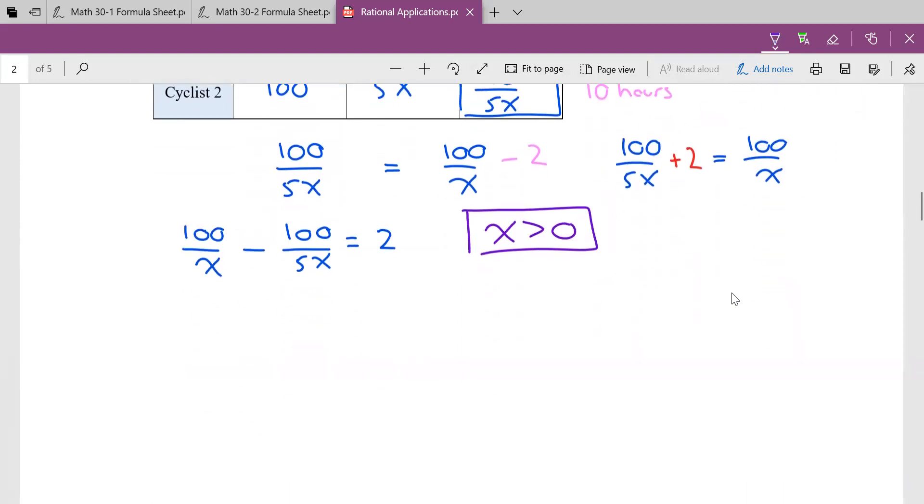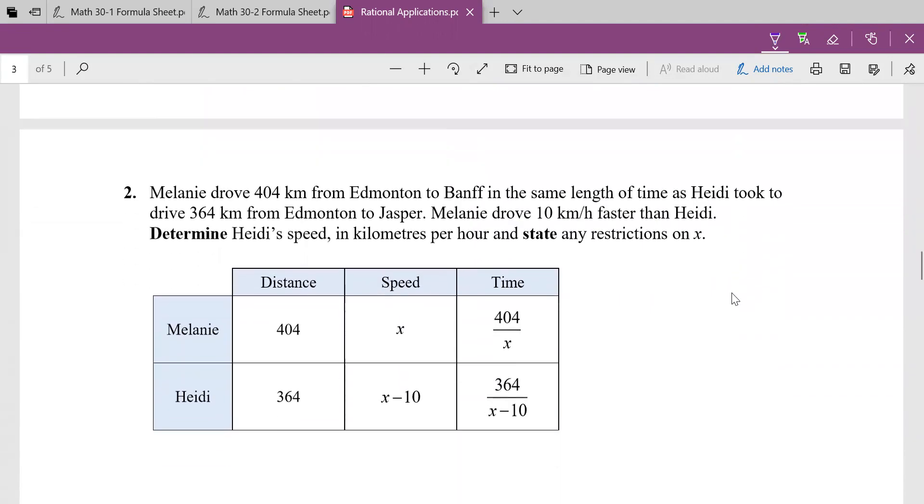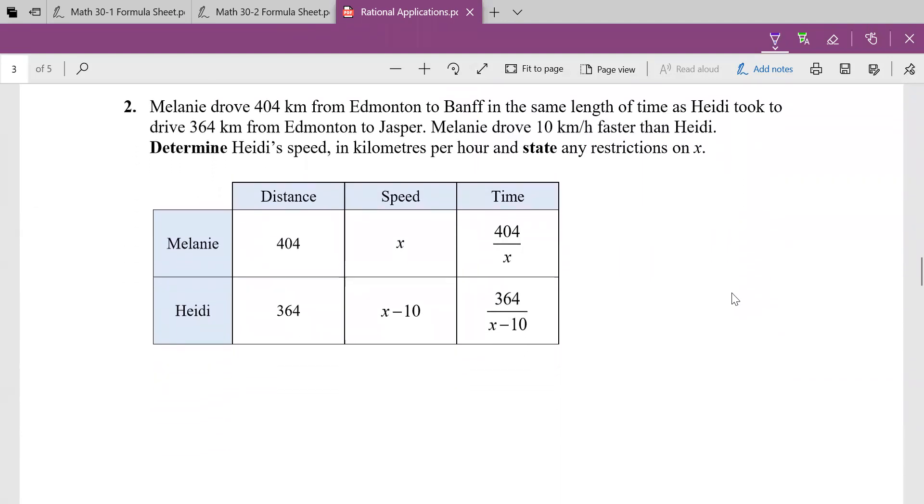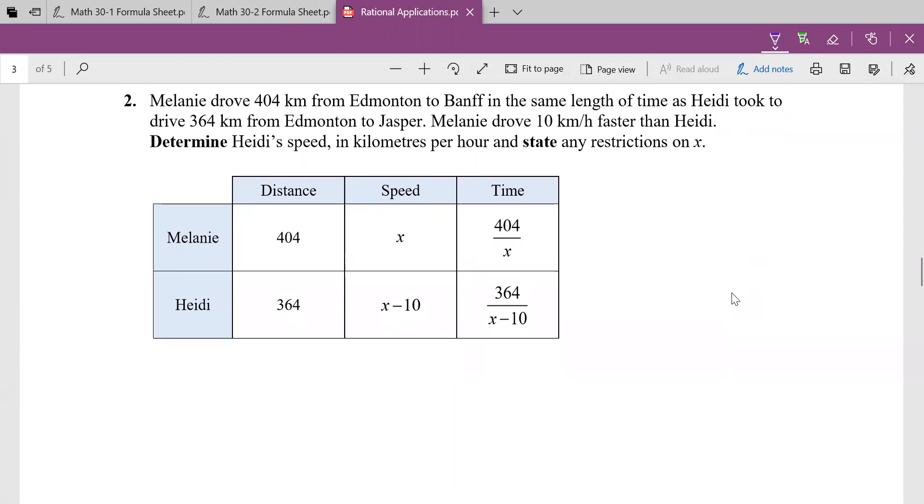Okay, let's try another distance speed time question. So the difference on this question is the chart's filled in. So there's two types of questions we're going to get. One where you have to just make the equation and where the chart's filled in and one where we actually have to solve. So Melanie drove 404 kilometers and Heidi drove 364. Melanie drove 10 kilometers faster. So I want to notice here, there's my speed of Melanie. Whoever set this question up said, okay, Heidi was going 10 slower. So that's why there's X minus 10.